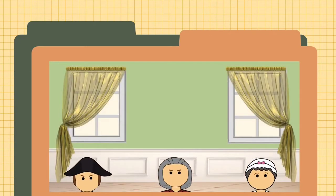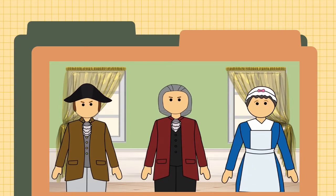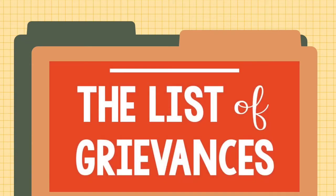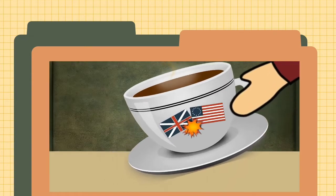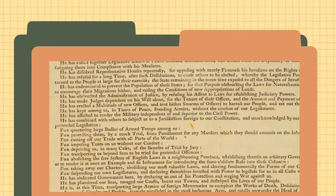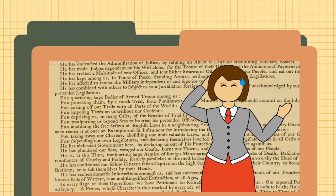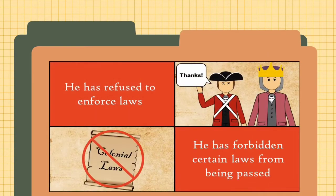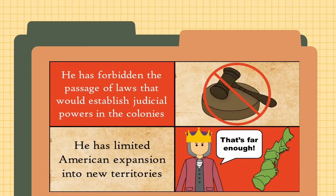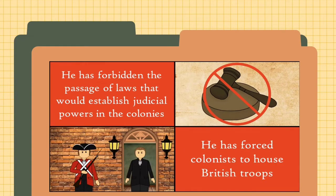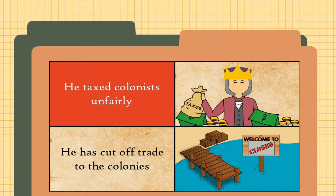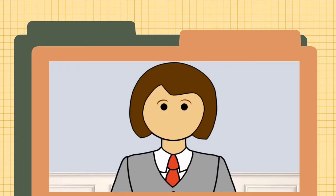By this point in the document, if it wasn't yet clear to Great Britain why America was separating from them, the colonists were about to bring their receipts. Thomas Jefferson really spilled the tea in the List of Grievances, where he set out to list all the complaints that the colonists had against King George III.